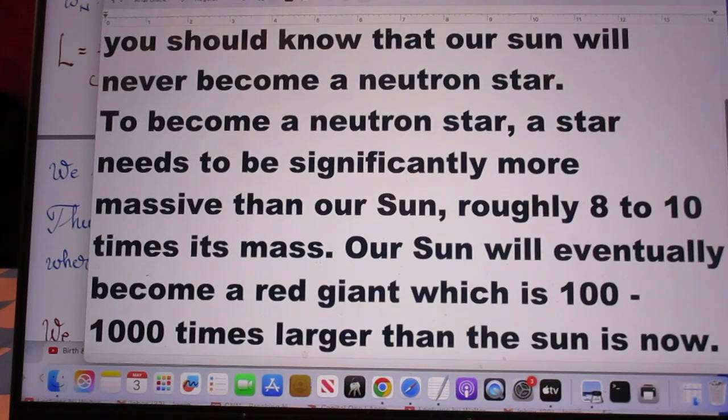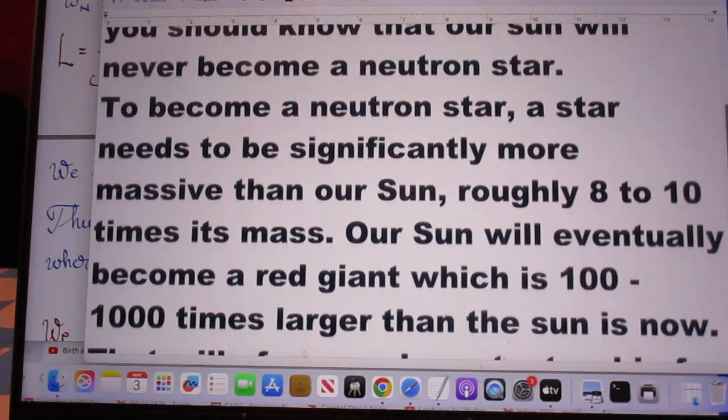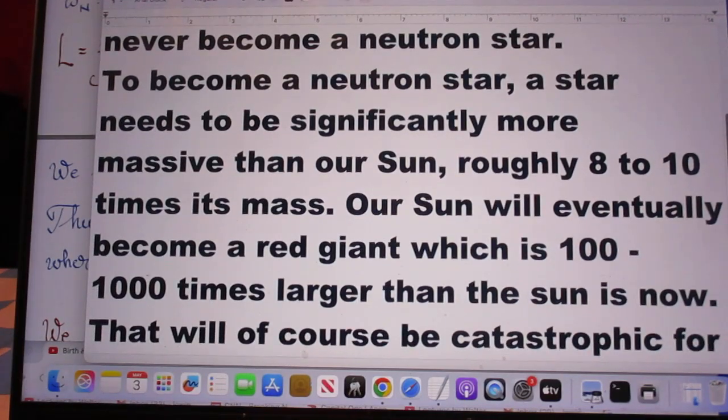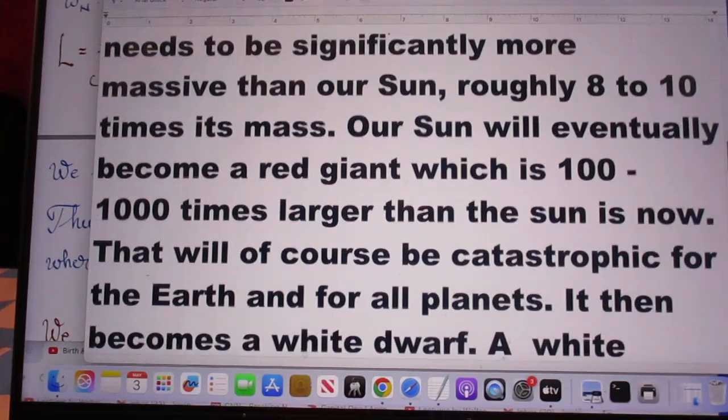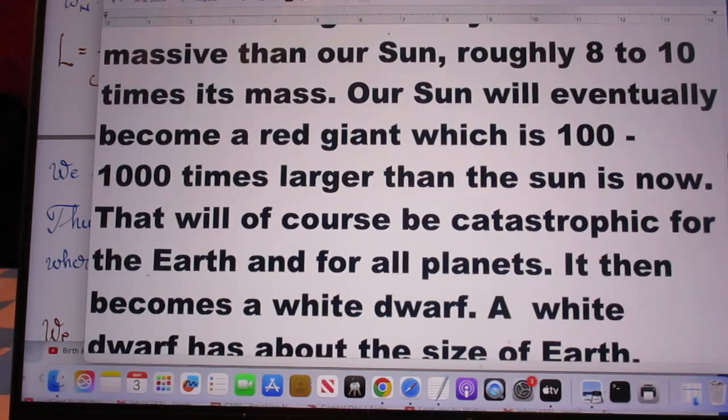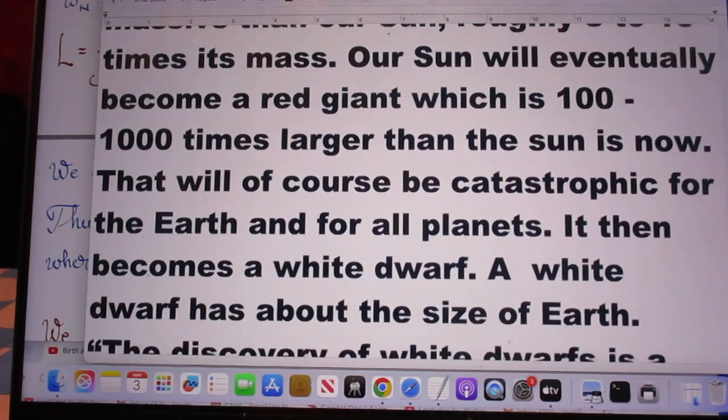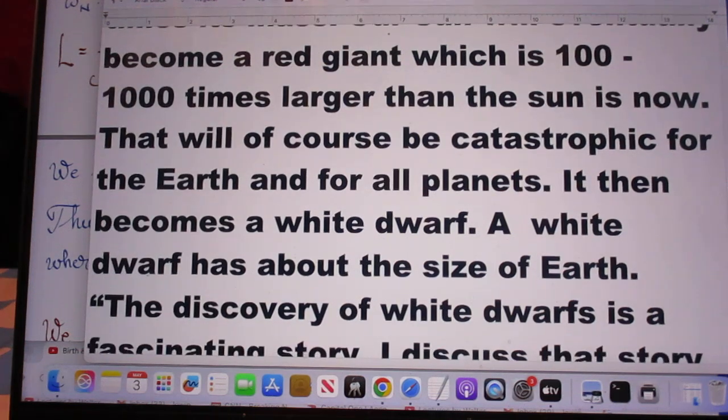To become a neutron star, the star needs to be significantly more massive than our sun, roughly 8 to 10 times its mass now. Our sun will eventually become a red giant, which is about 100 to 1000 times larger than the sun is now.